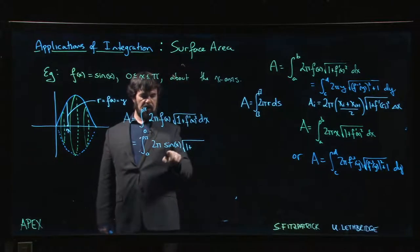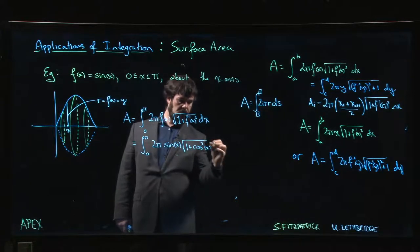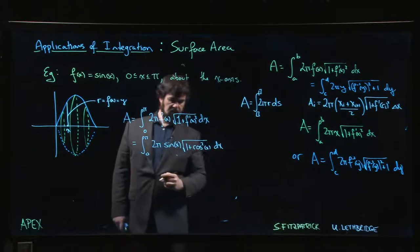we take f prime, derivative of sine is cosine, 1 plus cos squared x times dx.